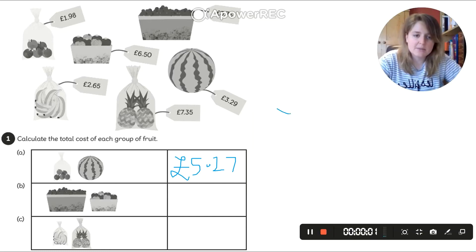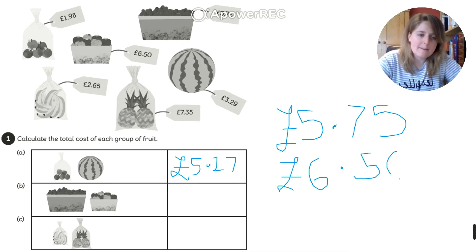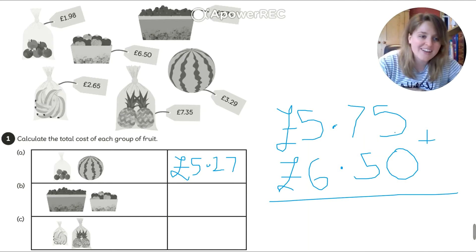And the next one is some cherries which cost me £5.75. And some tomatoes or strawberries. Can't remember what they were. Which costs £6.50. And I'm going to add these together. I think I'm getting pretty good at my numbers on this thing. OK. So 5 and 0. Dead easy. 5.